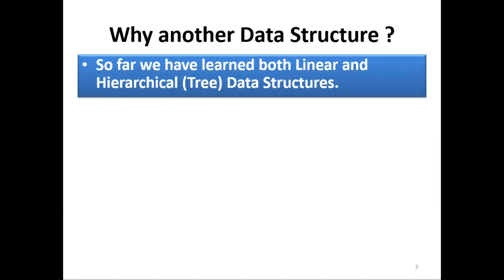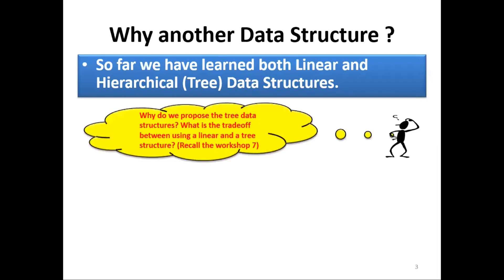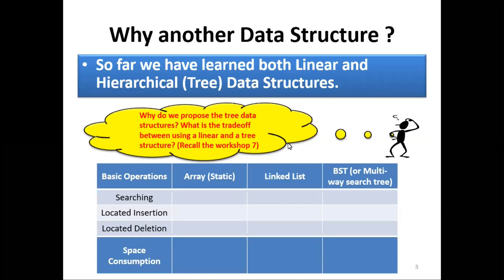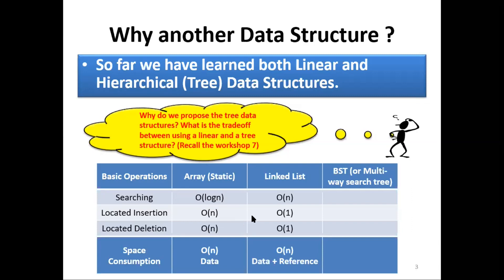Let's start by answering the question: why another data structure? We've learned the linear and the hierarchical data structures, and we know the reasons why we introduced the hierarchical data structure after studying linear ones. We discussed reasons why we need to implement the binary search tree. Arrays have many limitations — one of them is that inserting a data item into a sorted array has complexity of the order of n.